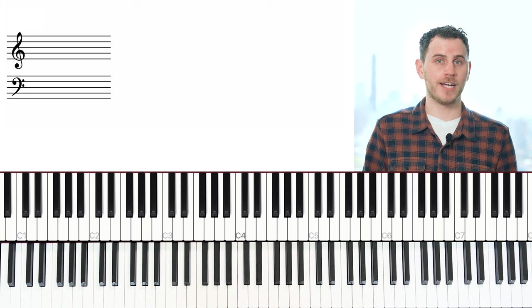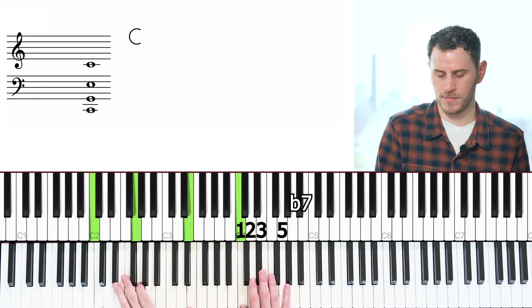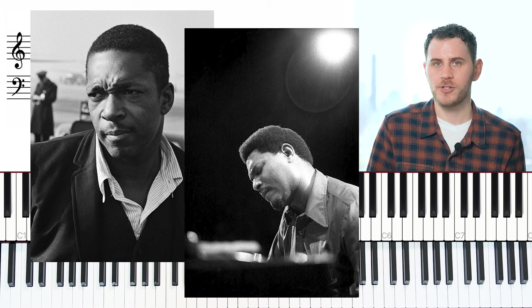Now a pentatonic scale we'll hear used in jazz quite a bit is the dominant pentatonic. So instead of the six, we actually have a flat seven. Now part of what makes this style of improvisation so unique is that the great players who really pioneered this, people like John Coltrane and McCoy Tyner, they didn't just stick to playing these notes in one simple order.